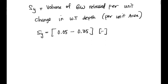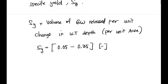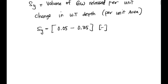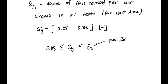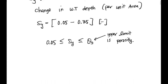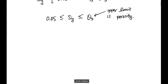When it comes to specific yield, it has limits. It typically ranges from 0.05, and the maximum of Sy is going to be the porosity. So the upper limit is porosity. That's the specific yield storage parameter for an unconfined aquifer.